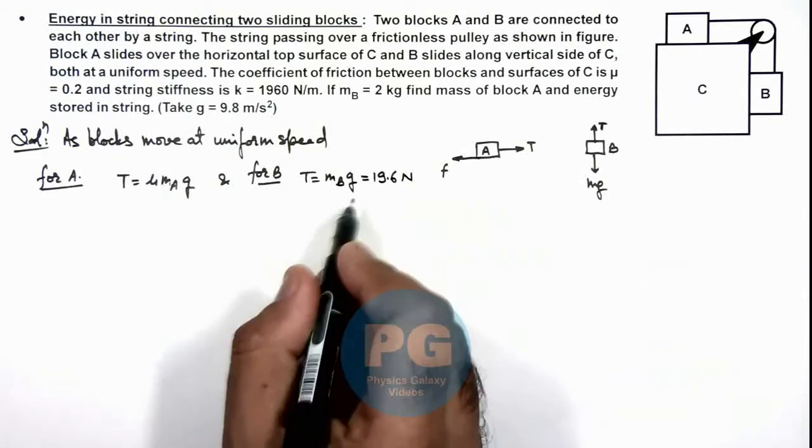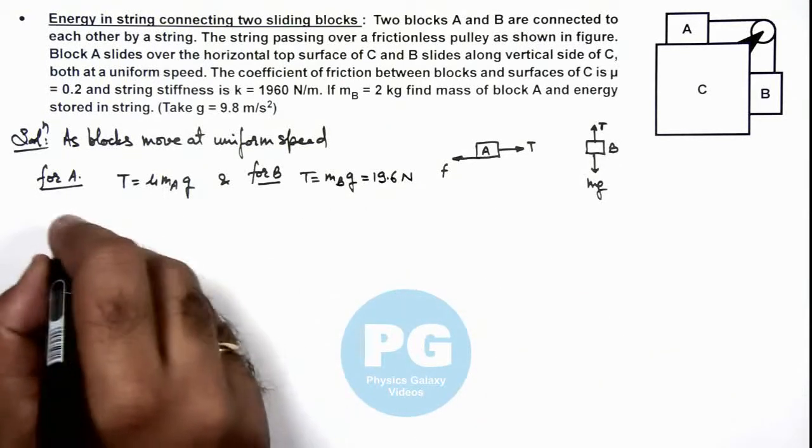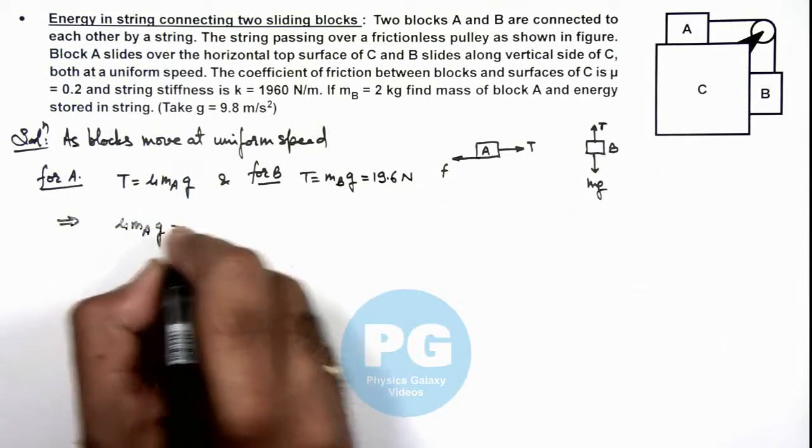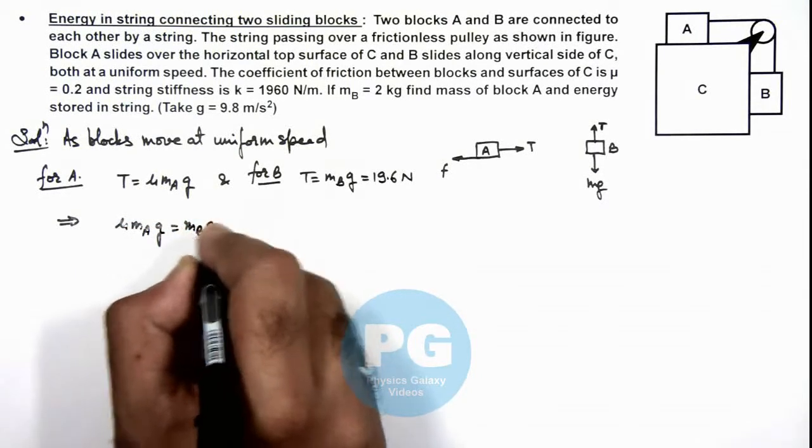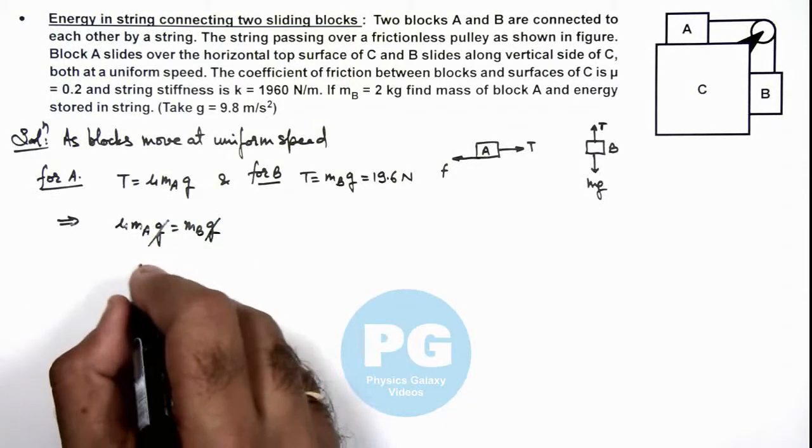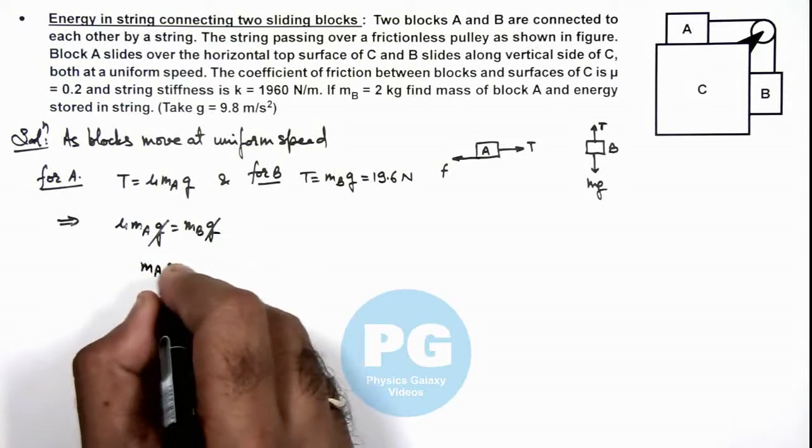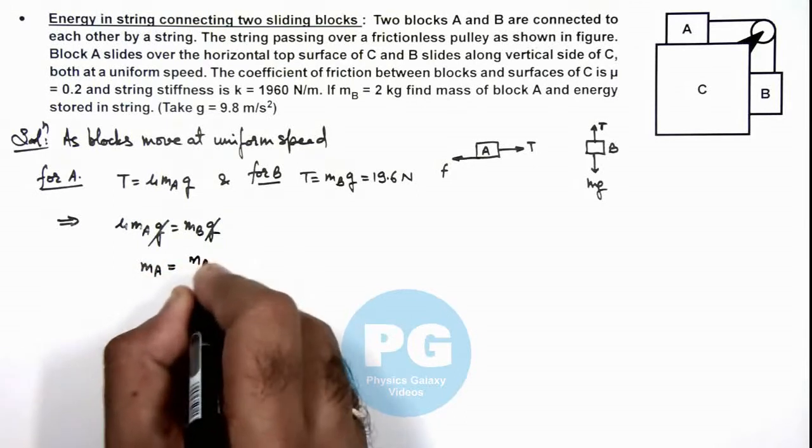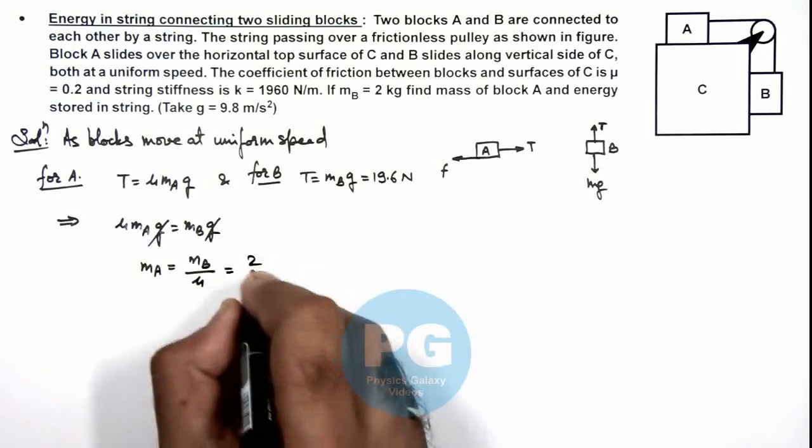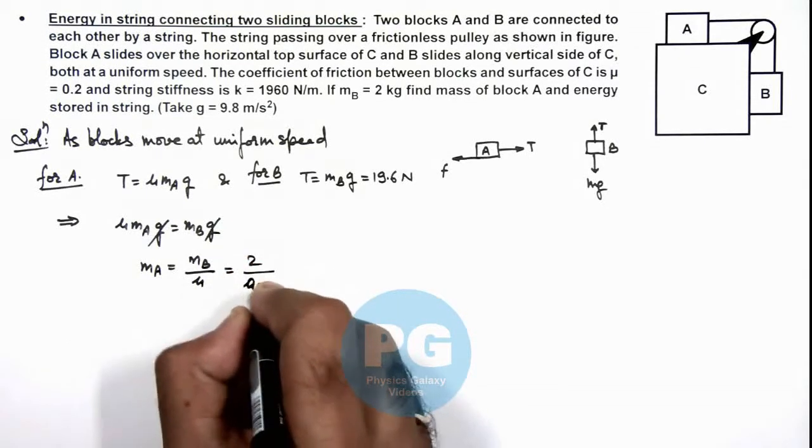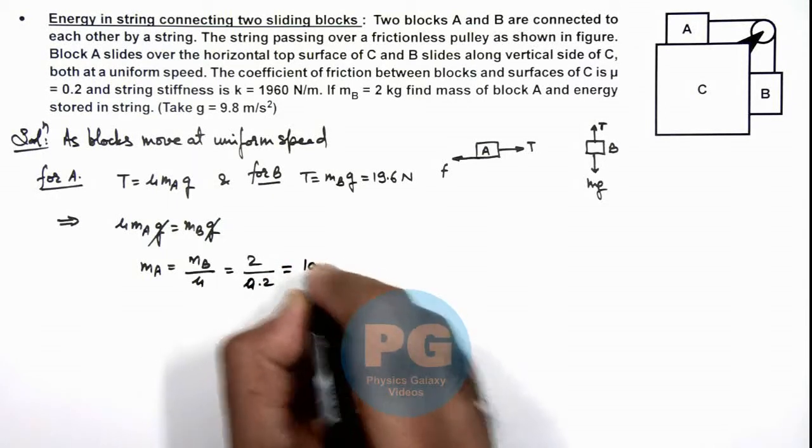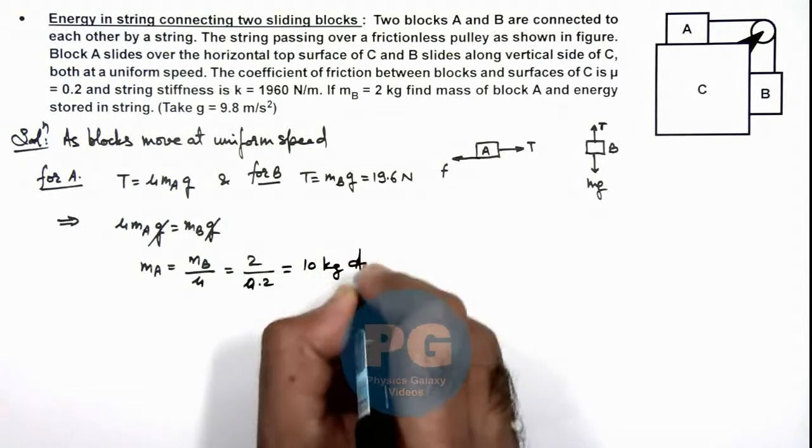From here if we write, it gives us μ·mₐ·g should be equal to mᵦ·g. And here g gets cancelled out and the value of mₐ we can write is equal to mᵦ divided by μ. As mass of block B is given as 2 and μ is 0.2, that means the value of mass of block A we are getting is 10 kg, which is one result of the problem.